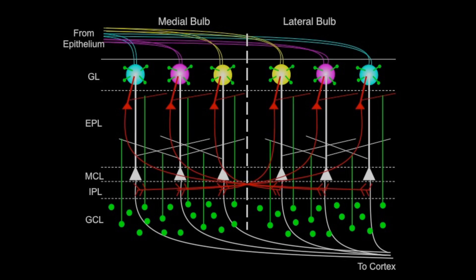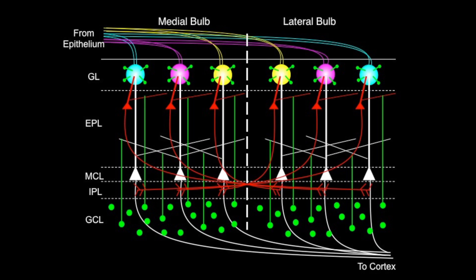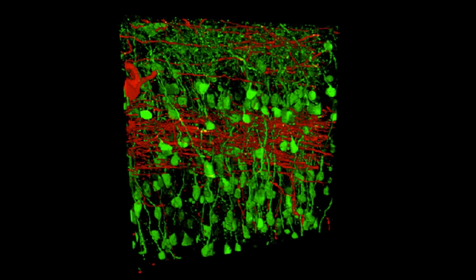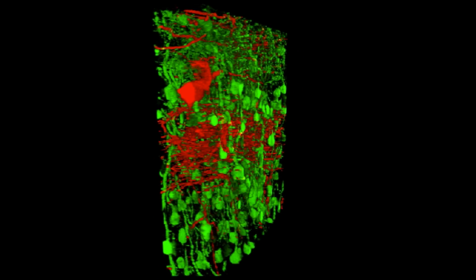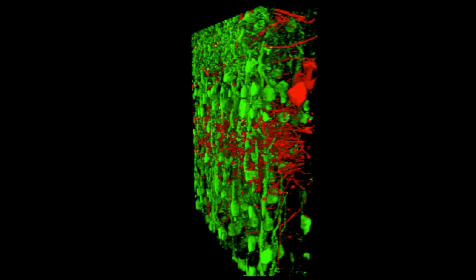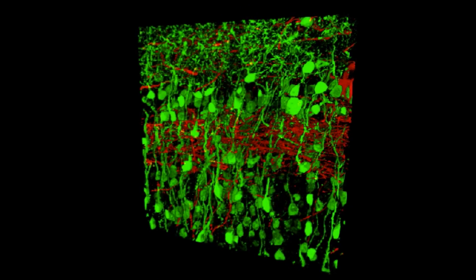One of the things that's sort of unique about the olfactory system is that it's designed to detect odors in the world that it may never come into contact with. So it has to maintain a certain level of flexibility, an ability to rewire and reorganize to respond to these odors.